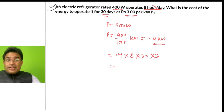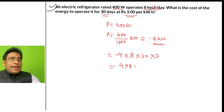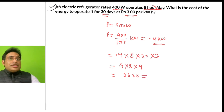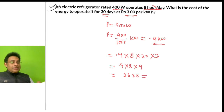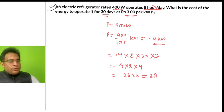So the total cost = 0.4 × 8 × 30 × 3. This gives the final answer for the total electricity cost of the refrigerator.